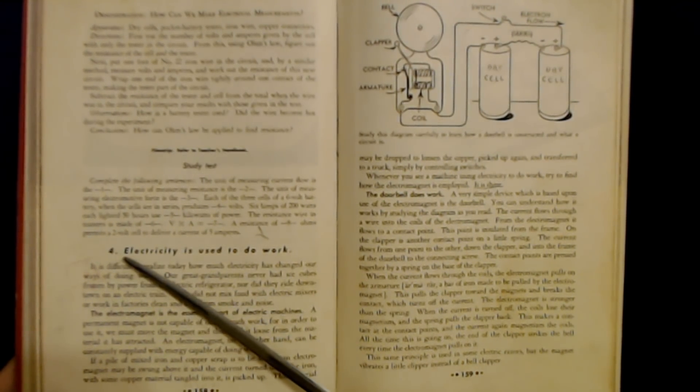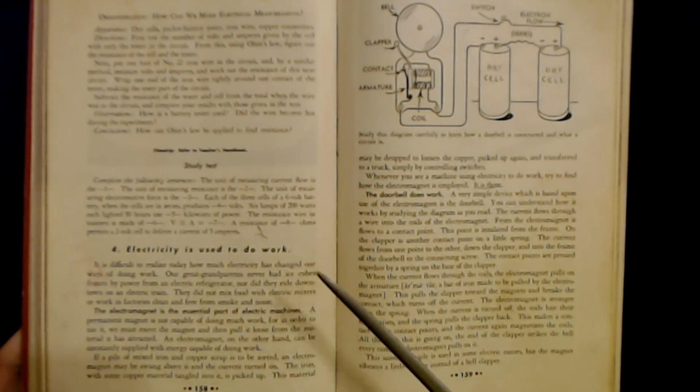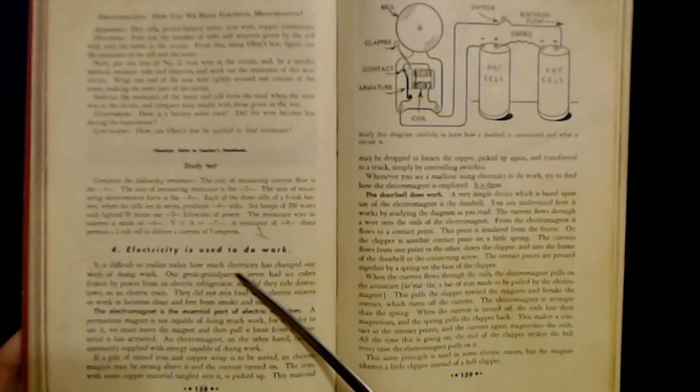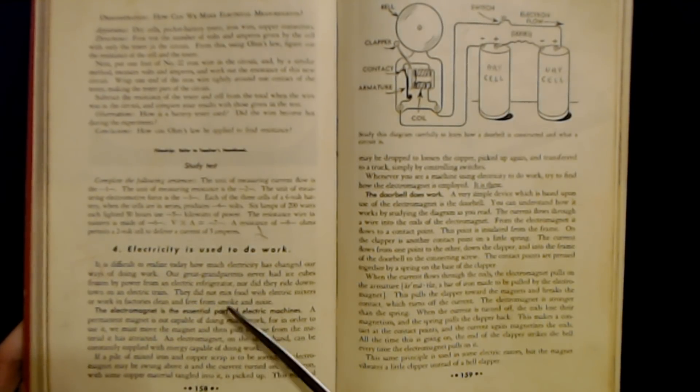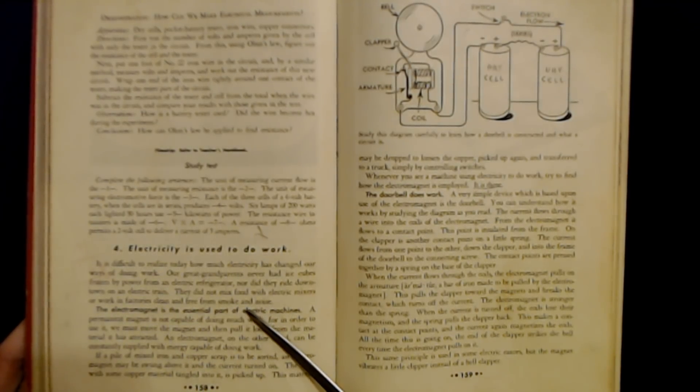We're going to start here with section four: Electricity is used to do work. It is difficult to realize today how much electricity has changed our ways of doing work. Our great-grandparents never had ice cubes frozen by power from an electric refrigerator, nor did they ride downtown on an electric train. They did not mix food with electric mixers or work in factories clean and free from smoke and noise.